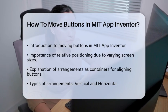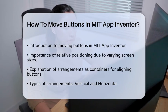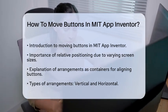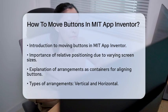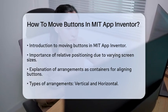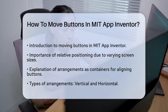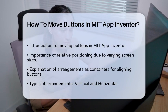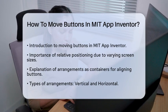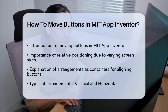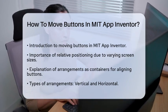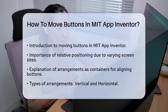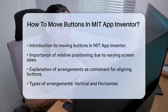First, let's talk about why simply dragging buttons to where you want them might not be the best approach. Different devices have different screen sizes, so what looks good on one device might not on another. To handle this, App Inventor uses a system called relative positioning.